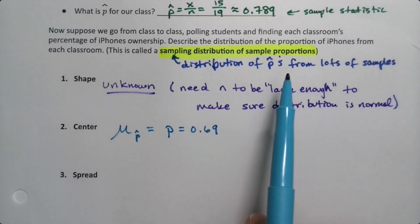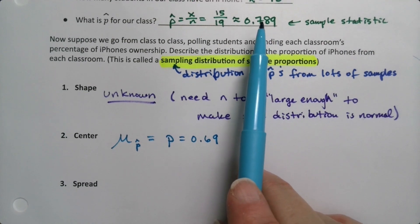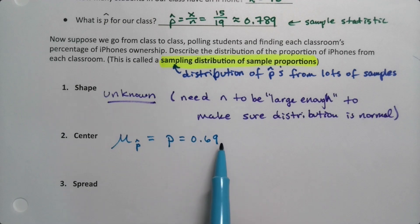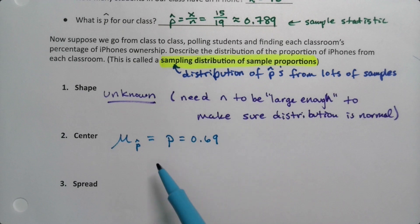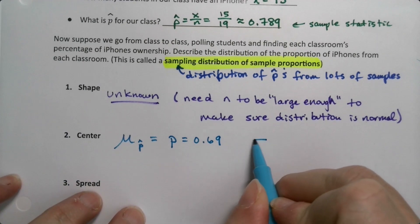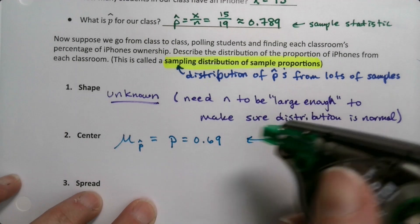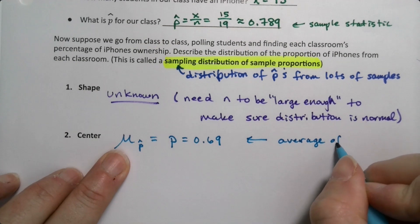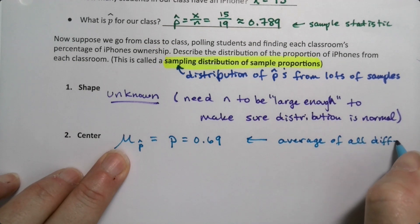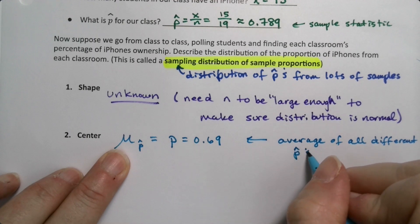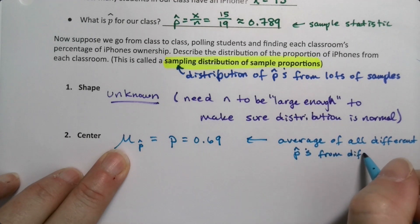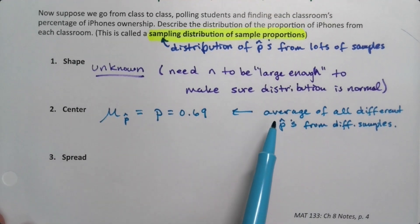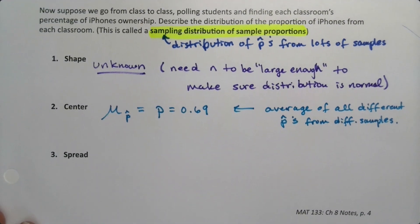When we go from room to room, some rooms will have a higher percentage of iPhones and some lower, but the average of all the different P-hats from room to room will be right around 0.69. So mu — the average of all the different P-hats from the different samples — should equal the population proportion, which was 0.69.